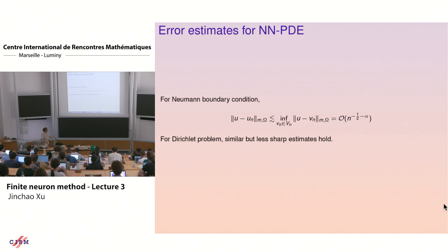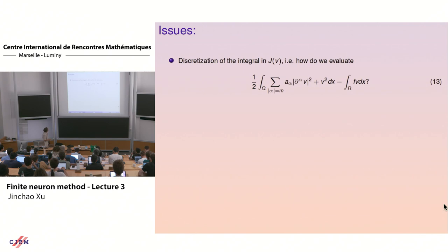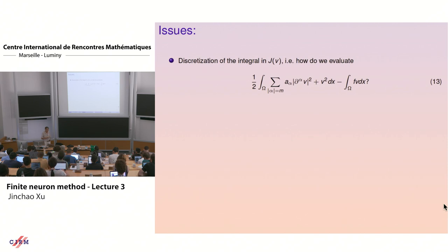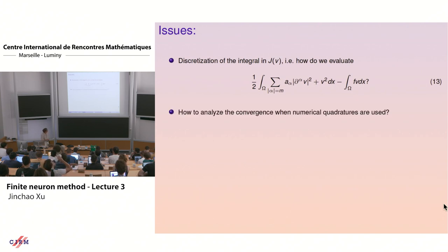We have a big if: if you solve the optimization problem. Before dealing with that, you need numerical quadrature. In finite element methods you do piecewise polynomial and integrate on each triangle — you have a smooth function there. But here you have an integration without elements, so the first issue is how to do numerical quadrature and how to analyze the convergence.